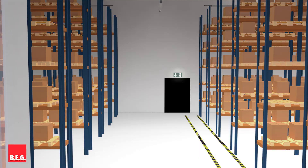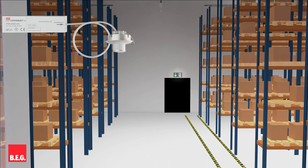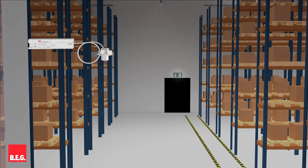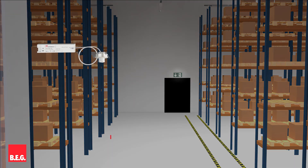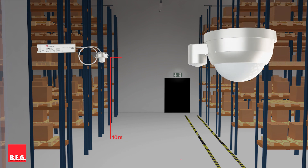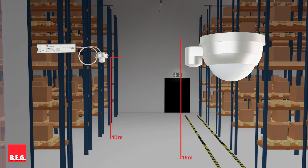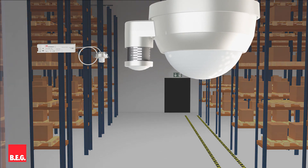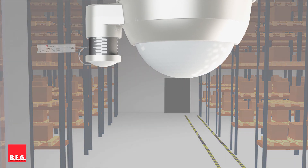For large mounting heights, such as in warehouses, we have the PD9 for a mounting height of up to 10 meters and the PD4 for a mounting height of up to 16 meters. These have a telescope-like sensor which can measure the brightness reliably at these greater heights.